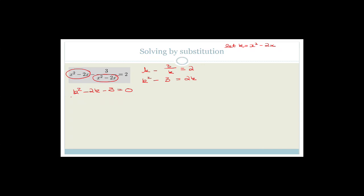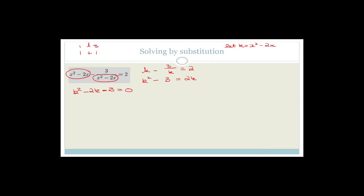The coefficient in front of k squared is 1. The factors of 3 are 3 and 1. The minus tells me the signs have to be different, so it's going to be k minus 3, k plus 1 equals 0. Therefore k is equal to 3 or k equals negative 1.